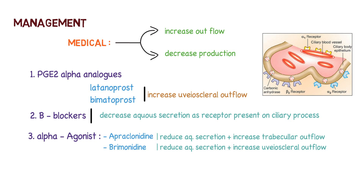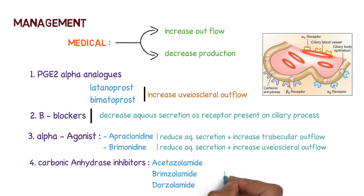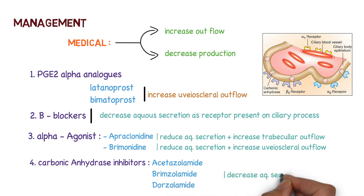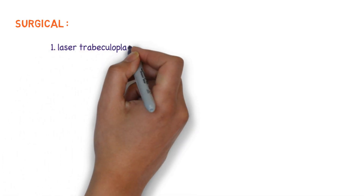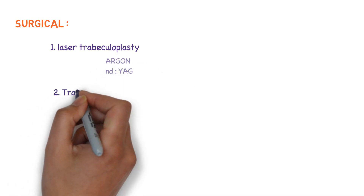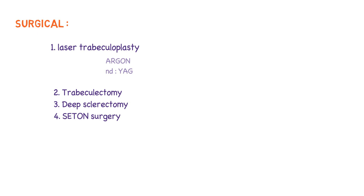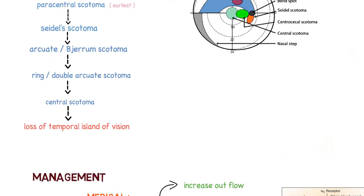Note that apraclonidine increases trabecular outflow and brimonidine increases uveoscleral outflow — this distinction may be asked in your PG entrance exam. The fourth category is carbonic anhydrase inhibitors, such as acetazolamide, brinzolamide, and dorzolamide, which decrease aqueous secretion. For surgical management, options include laser trabeculoplasty using argon and Nd:YAG laser, trabeculectomy, deep sclerectomy, and seton surgery.